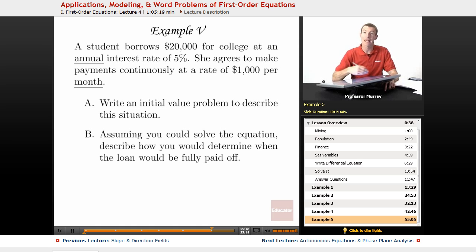And then she agrees to pay off an annual interest rate of 5%. So she's going to make her payments continuously at a rate of $1,000 per month. The idea here is that every month she's going to pay $1,000, that's a constant. But at the same time, she's got this large balance, which is building up interest.